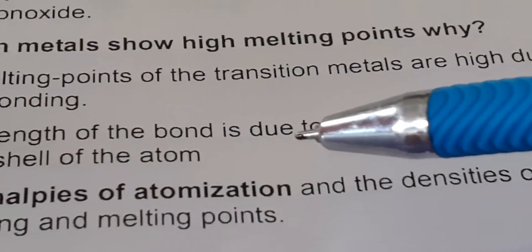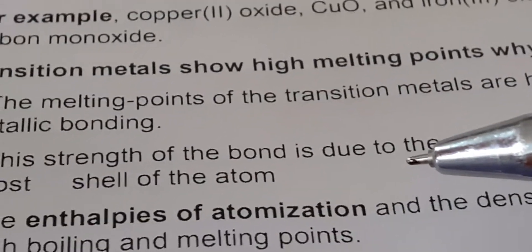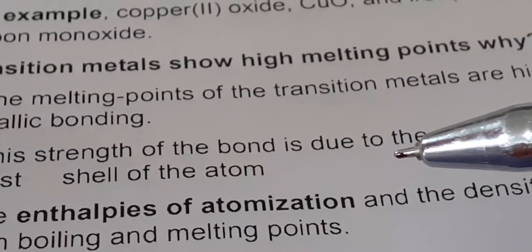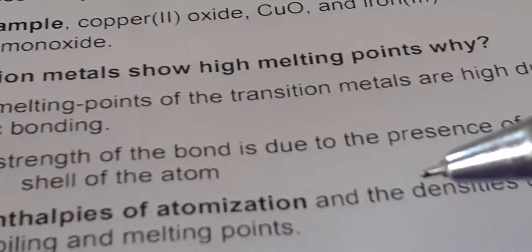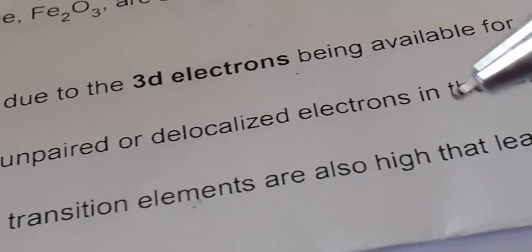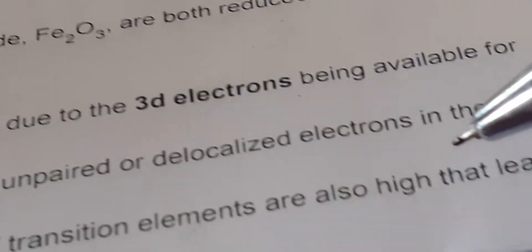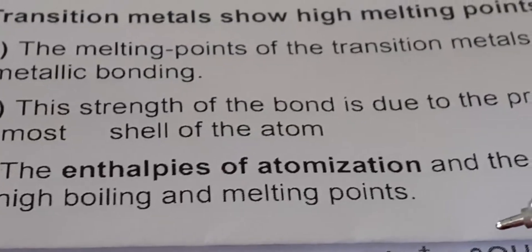The second point is that the strength of the bond is due to the presence of unpaired delocalized electrons in the outermost shell. The electrons are delocalized and the unpaired electrons are available, which contributes to the high melting point of transition elements.